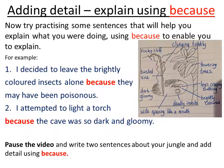The next way we're going to add detail is using the word 'because'. If we use 'because' it explains what we were doing and gives us a chance to expand our sentence and give a reason at the end. I tried to put things in here that I hadn't already written about. So I wrote: 'I decided to leave the brightly coloured insects alone because they may have been poisonous.' That's the reason. Number two: 'I attempted to light a torch because the cave was so dark and gloomy.' Yesterday I wrote 'dark and gloomy' and today I've used it in my sentence with the word 'because'.